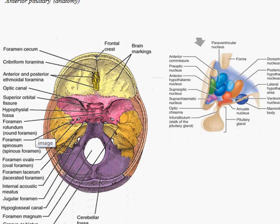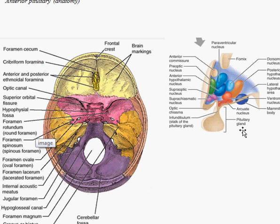Now we'll go through the anatomy quite quickly. This is the skull viewed from the top down, spliced in half. The important bit to note is the sphenoid bone shown in pink. The pituitary gland sits in a specially made depression in the skull in this region, called the sella turcica, which means 'Turkish saddle.' The hypothalamus and infundibulum are superior extensions of the pituitary gland, sitting above it.